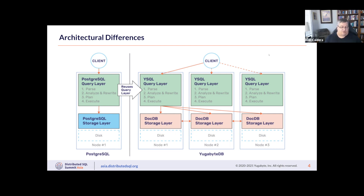This differs from Oracle RAC. Oracle RAC also has a distributed query architecture where you can attach two different nodes, but they are all looking at a single unified copy of the disk underneath.